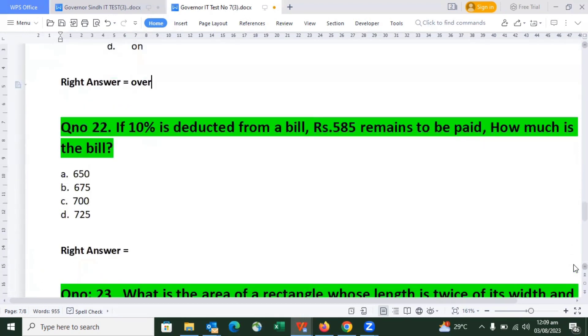Question number 22: If 10% has been deducted from a bill, the amount is Rs. 585. How much is the bill? The answer we found is 650, so option A is the right answer.